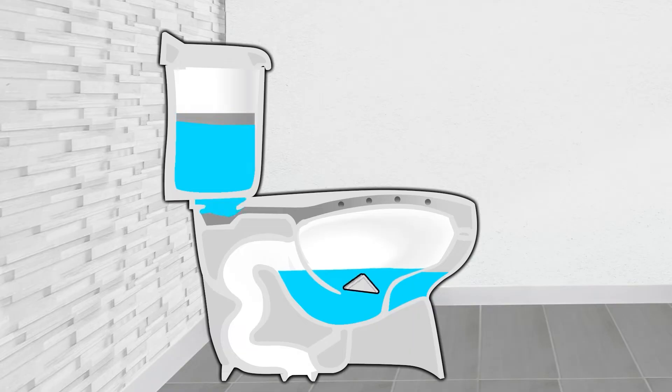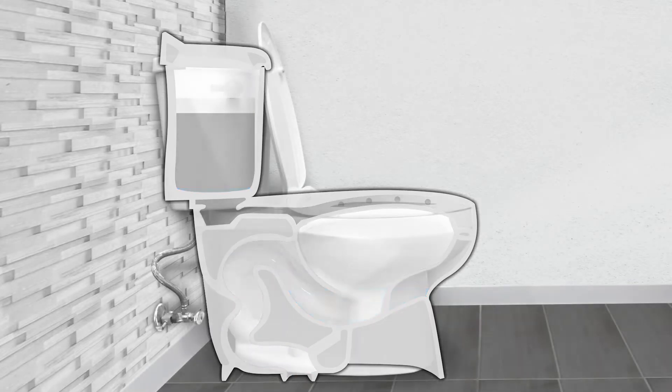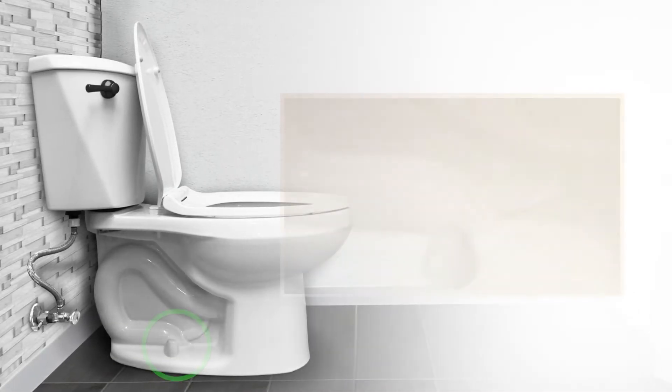When water from the tank pours into the bowl, it raises the water level above the top of the trapway. Once this occurs, waste water is siphoned out of the bowl and down through the floor drain.